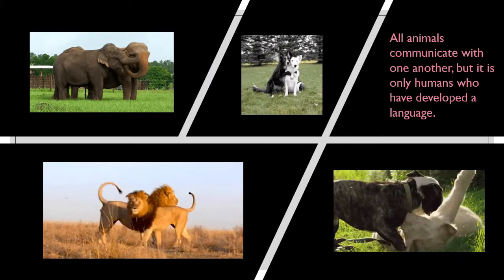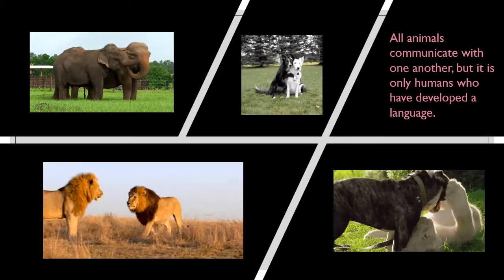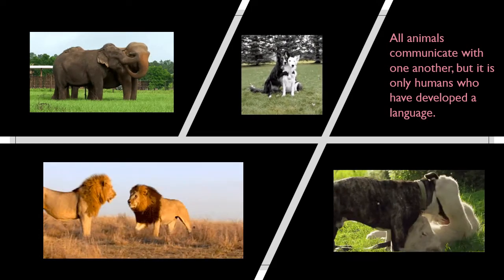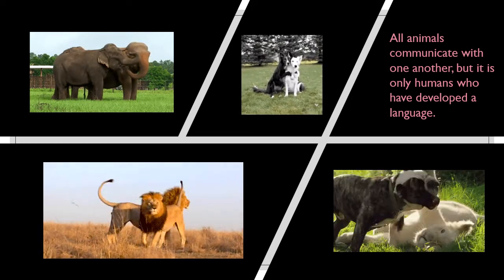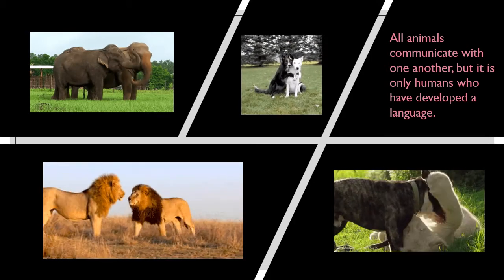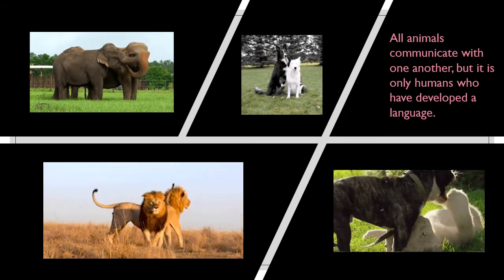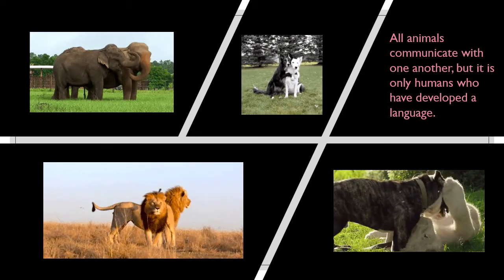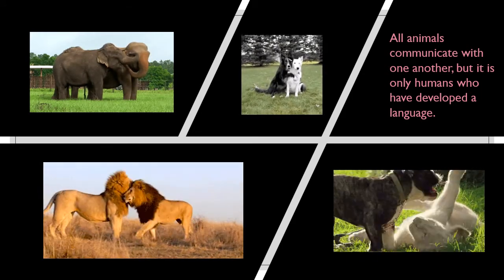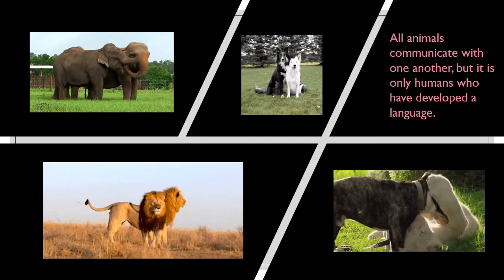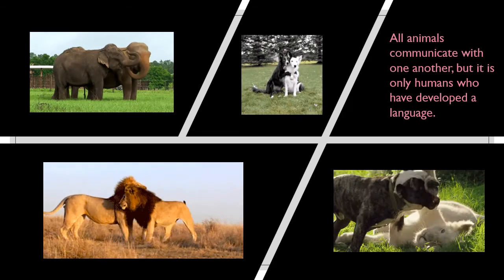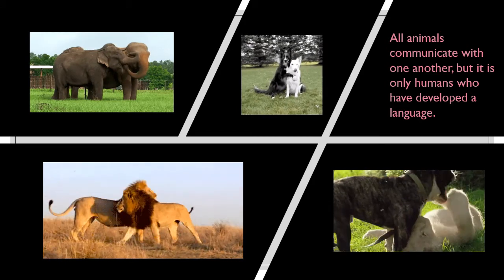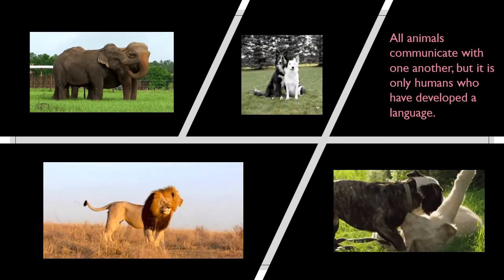Children, even animals communicate with one another, but it is only humans who have developed a language. Language is the method of human communication. We either communicate by speaking to someone or by writing to someone. So whenever we speak or write to someone, we use words to express our thoughts, our feelings, and ideas.